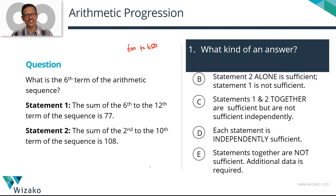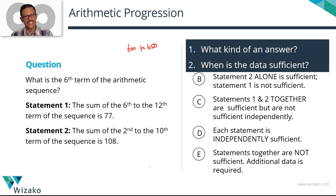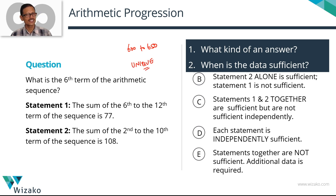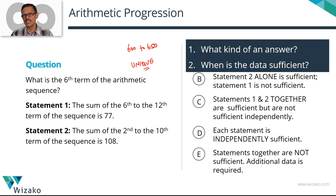The second question is very crucial. Having clarity on this is very important to getting any DS question right, and that is: when is the data sufficient? For any 'what is the value' question in data-sufficiency, the data is sufficient if you are able to come up with a unique answer. The value should be unique. If you can say the sixth term is 43 and it cannot be anything else — either using statement 1, statement 2, or together — then the data is sufficient. If you come up with more than one answer, or you cannot find the value at all, the data is not sufficient. The operative keyword is getting a unique value.